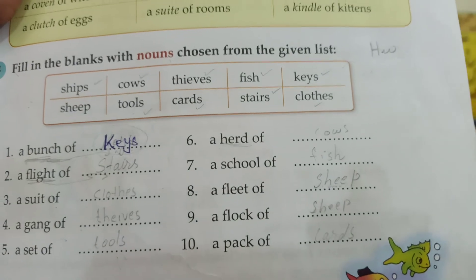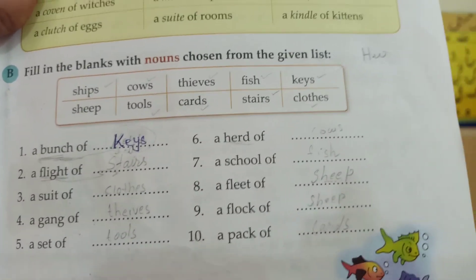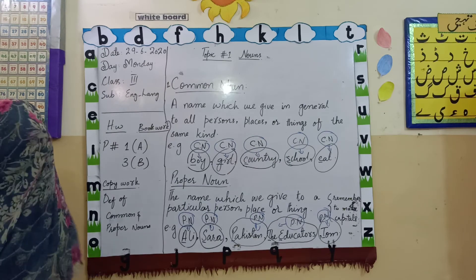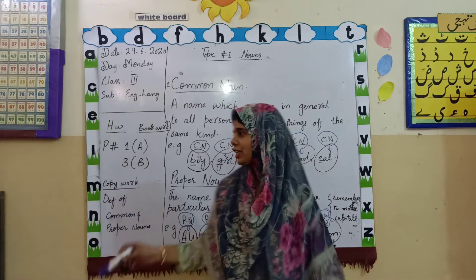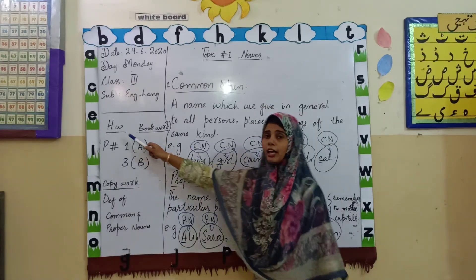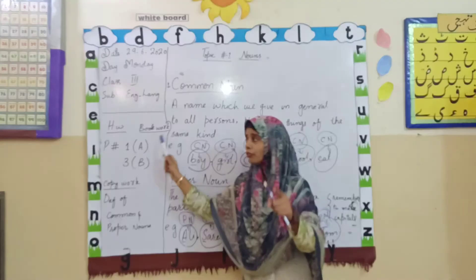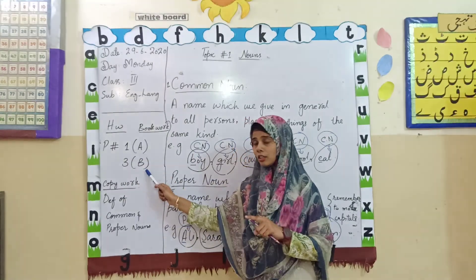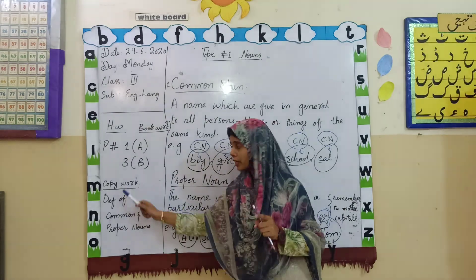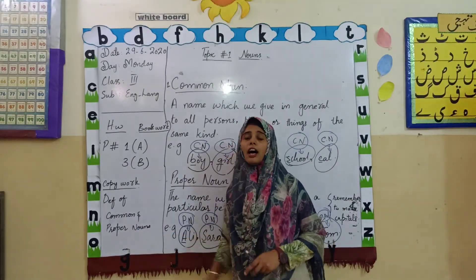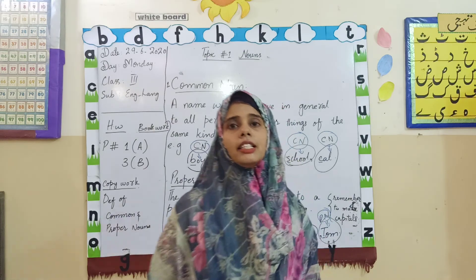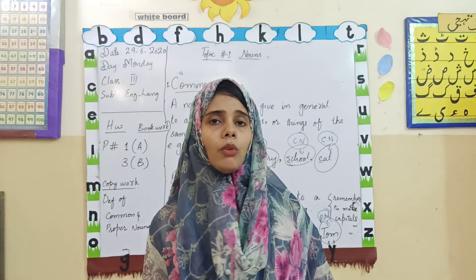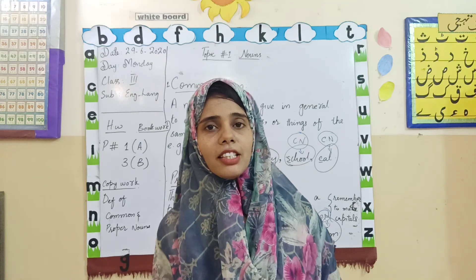You have to do this exercise also. I have given you the homework — you can see on the board what you have to do at home. Your book work: page number 1, exercise A, and page number 3, exercise B. Your copy work: definition of common and proper noun. I hope you have got all about this. If you want to know more information, ask me on WhatsApp. Thank you so much. Allah Hafiz. Amen.